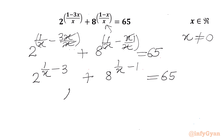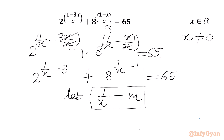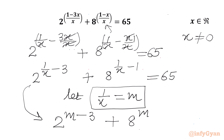Now let us assume 1 over x equal to m. So our exponential equation will become 2 raised to the power (m minus 3) plus 8 raised to the power (m minus 1) equal to 65.